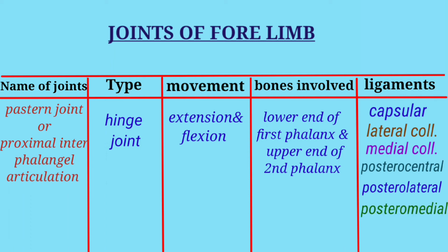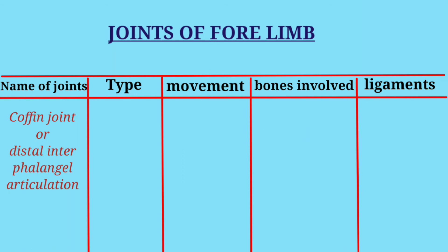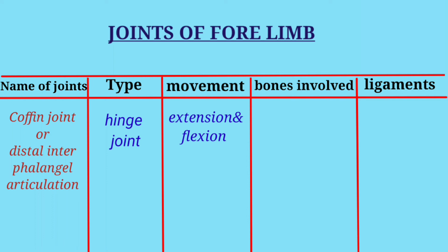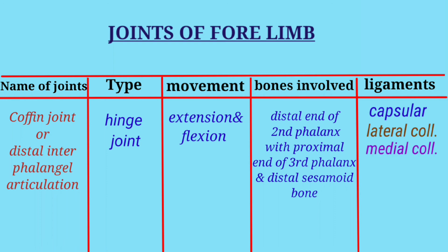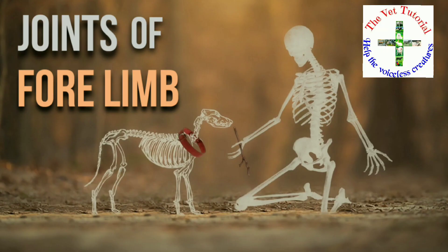The last joint of the forelimb is the coffin joint or distal interphalangeal articulation. The type of joint is hinge joint and movement is extension and flexion. Bones involved are the distal end of the second phalanx with the proximal end of the third phalanx and the distal sesamoid bone. Ligaments are the capsular ligament, lateral collateral ligament, medial collateral ligament, cruciate ligament, and superior and inferior navicular ligament.